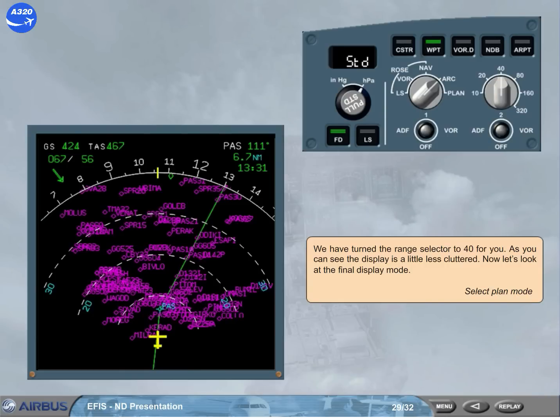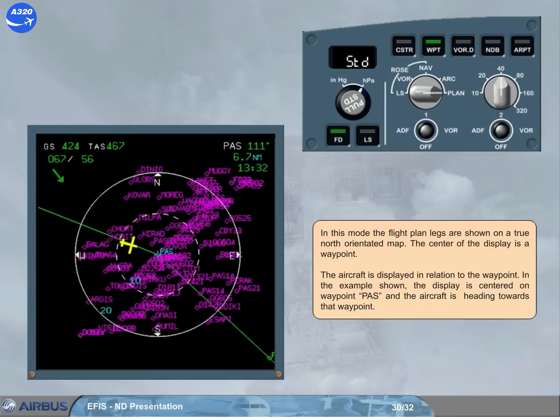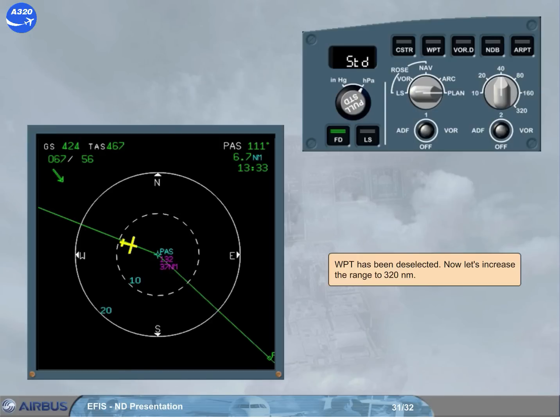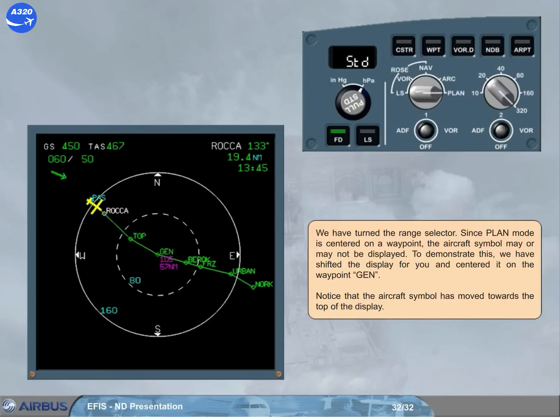Select plan mode. In this mode, the flight plan legs are shown on a true north orientated map. The center of the display is a waypoint. The aircraft is displayed in relation to the waypoint. In the example shown, the display is centered on waypoint Papa Alpha Sierra, and the aircraft is heading towards that waypoint. Waypoint has been deselected. Now let's increase the range to 320 nautical miles. We have turned the range selector. Since plan mode is centered on a waypoint, the aircraft symbol may or may not be displayed. To demonstrate this, we have shifted the display for you and centered it on the waypoint Gulf Echo November. Notice that the aircraft symbol has moved towards the top of the display.